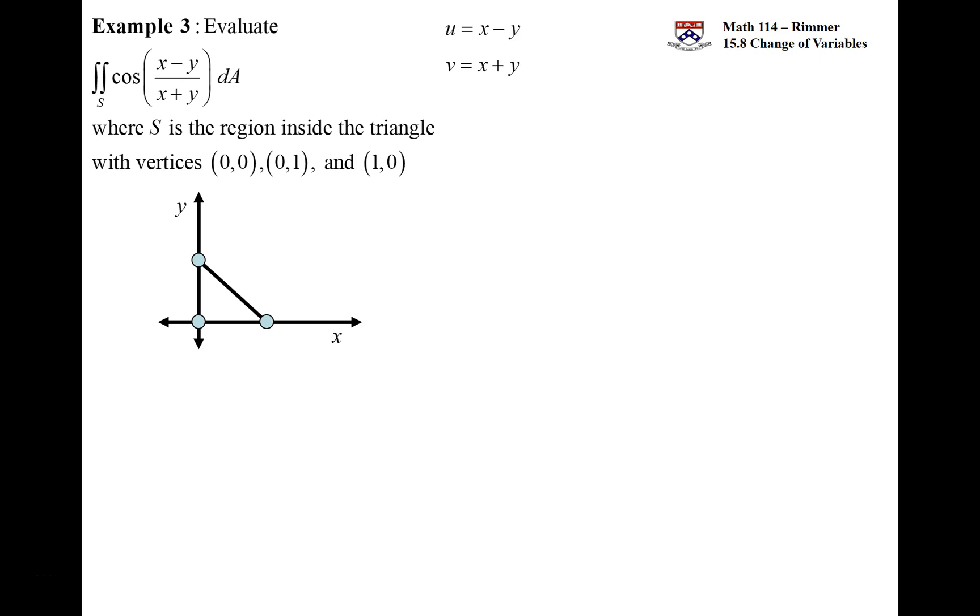We're changing from xy space into uv space. Now, it's a linear transformation, meaning that the exponents on these x's and y's are all one. They're not inside of any functions. This is a linear transformation. The region that we are transforming is just bounded by lines. We have this closed bounded region, and the boundary parts are lines. The combination of a linear transformation on a region that is bounded with lines means that when we map into uv space, we'll also have a region that's bounded by lines.